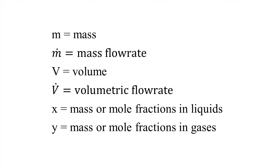You're going to want to write values with units for each known variable at the location of the streams on the chart — write down what you know and put it in the right spot. And then for the things you don't know, assign algebraic symbols to those unknown variables in the streams, and indicate what units you want to use. In general, there's a convention: for mass, we always use M; for mass flow rate, M-dot; volume is always V; volumetric flow rates are V-dot. For mass or mole fraction in a liquid, use X; and in a gas, use Y.